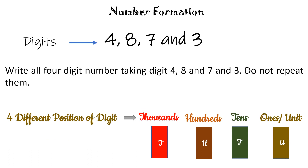Today, let us talk about how to make different greatest and smallest numbers using given digits. Suppose we have four digits: 4, 8, 7, and 3. Using these digits, we want to make different four-digit numbers in such a way that no digit is repeated in them.